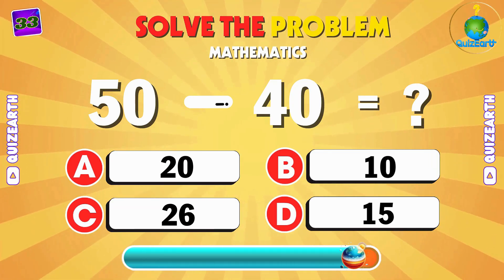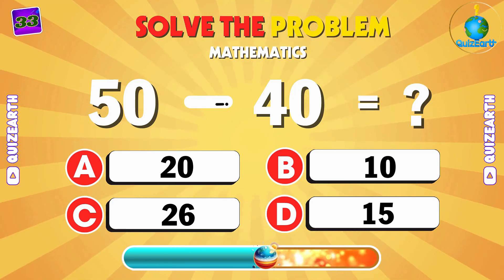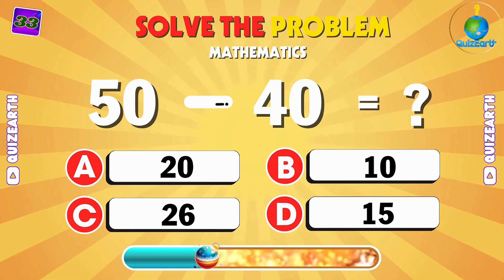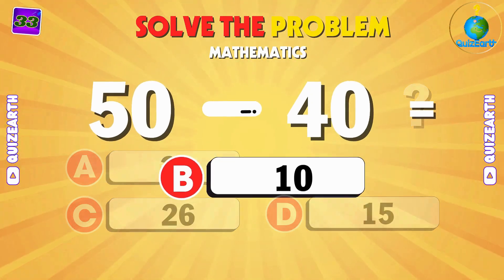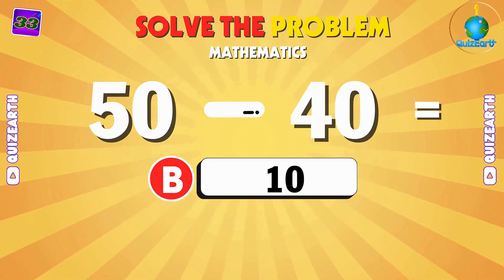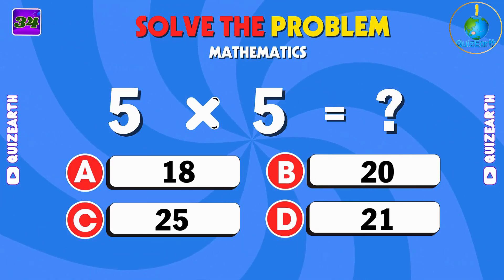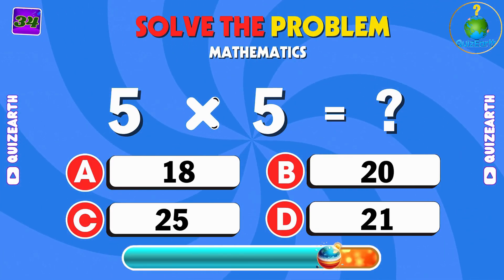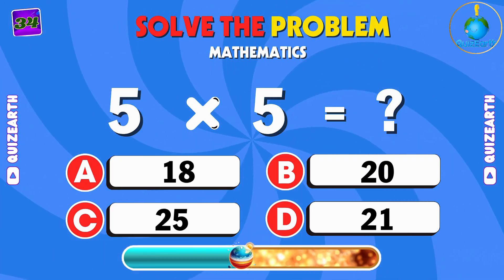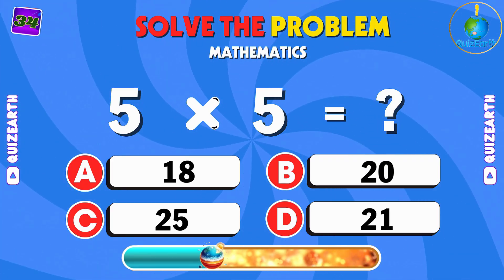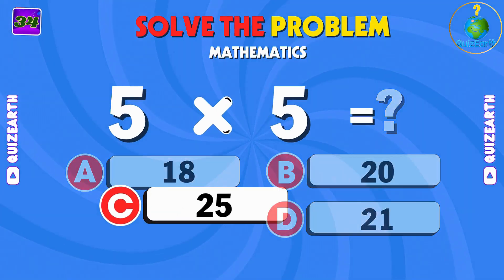Subtract 40 from 50 — what do you get? A: 20. B: 10. 5 times 5 — what do you think? C: 25.